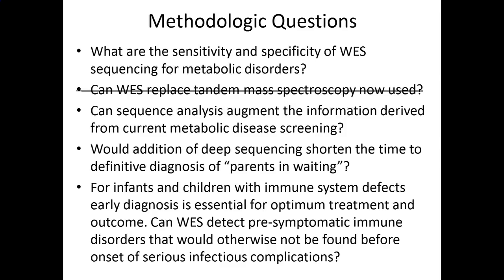In other words, we'd like to know: could it identify patients who might have an abnormal screen and yet be asymptomatic during their lifetime, or, in contrast, patients who would need early intervention and special diets, for example? We also want to know: would addition of deep sequencing shorten the time to a definitive diagnosis and relieve parents of the anxiety of waiting to see what their child really has?